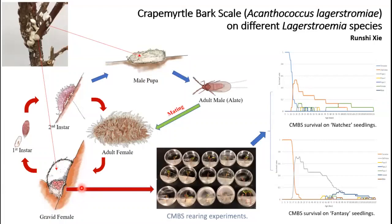In order to investigate the effects of host plants on the life cycle of quakemoto bark scale, I conducted several insect rearing experiments using different microstromia species as the host plants. I collected eggs from the gravid females and then incubated these eggs until they hatched into the first instars.